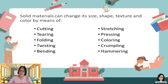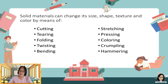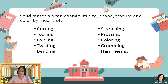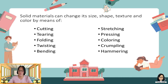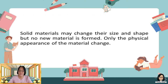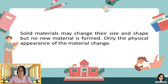Children, remember that solid material can be changed in size, shape, texture, and color by means of cutting, tearing, folding, twisting, bending, stretching, pressing, coloring, crumpling, and hammering. Solid materials may change their size and shape, but no new material is formed. Only the physical appearance of the materials is changed.